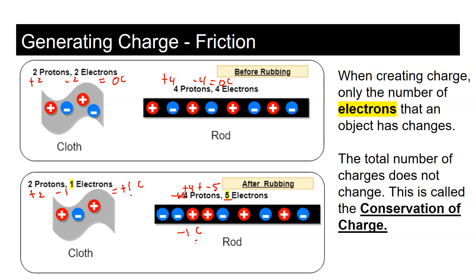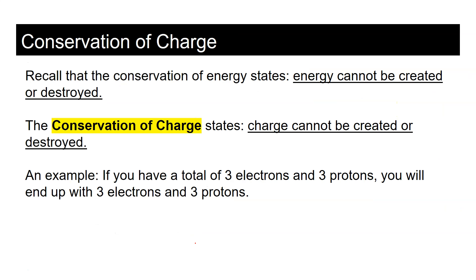After rubbing, there are still six protons and six electrons total — one electron simply moved from the cloth to the rod. This is the conservation of charge: the total number of electrons and protons does not change. Since protons and electrons are matter, this is really just conservation of matter applied to electrical charges. Just like energy cannot be created or destroyed, charge cannot be created or destroyed.